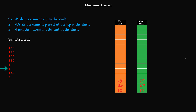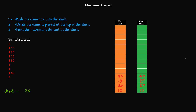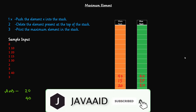When query type 3 comes — print the maximum element — we look at the top of the max stack, not the main stack. So we print 20. Then we push 40 into the main stack, compare with the top of the max stack, 40 is greater, so we push 40 into the max stack. Another type 3 query: the top of the max stack is 40, so we print 40. I hope this logic is clear.